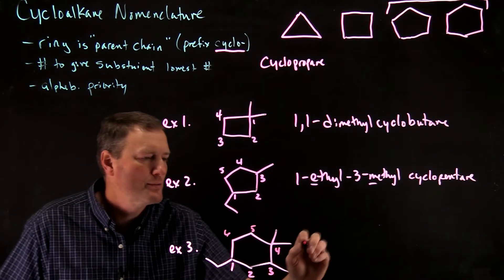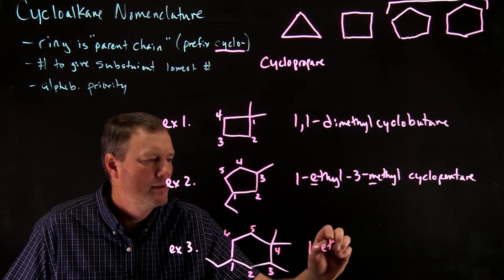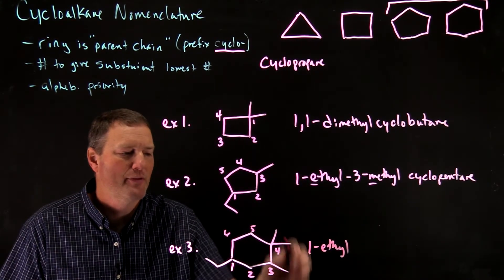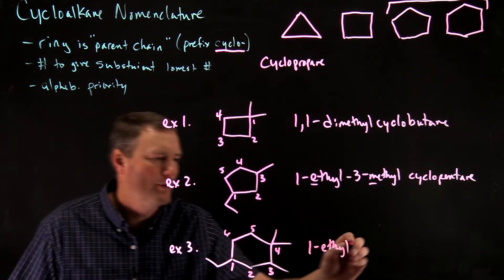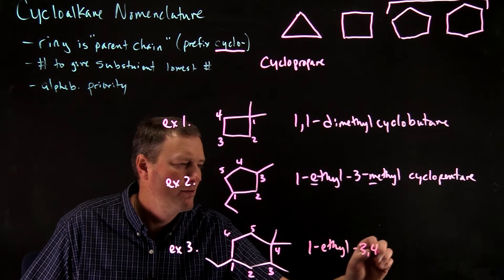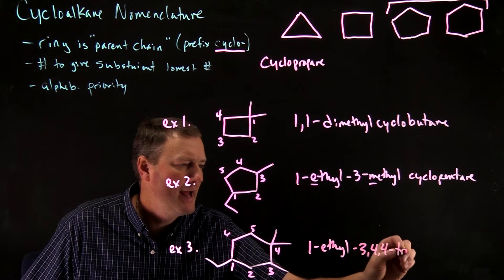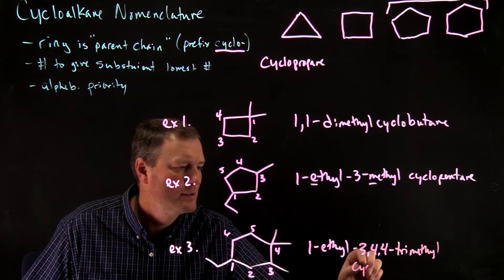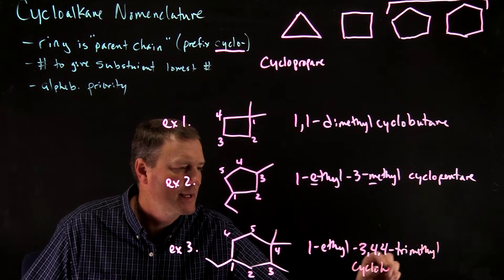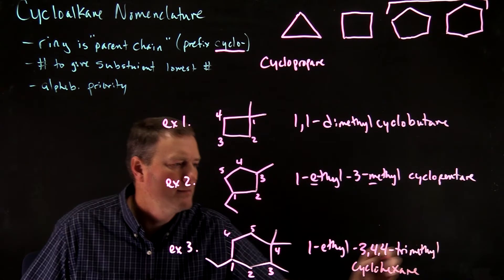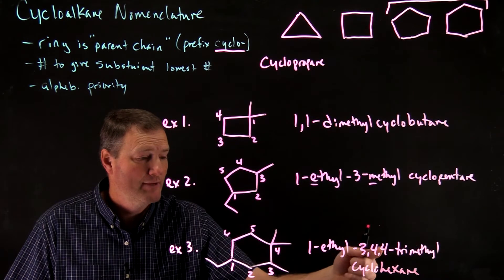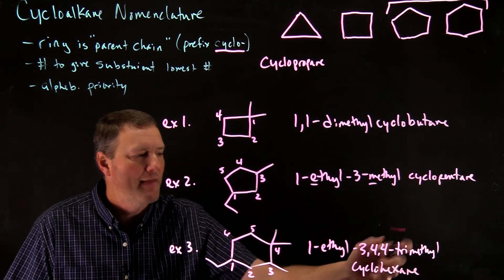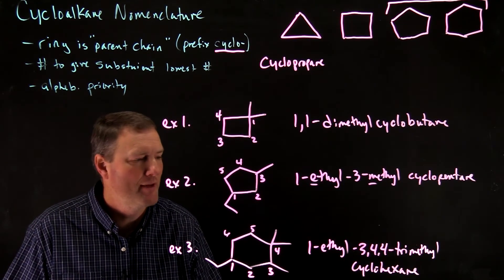So this would now be 1-ethyl-3,4,4-trimethylcyclohexane. Notice again, I have three individual numbers for one, two, and three for the three different methyl groups. And then I also have to insert that tri in front of the methyl.